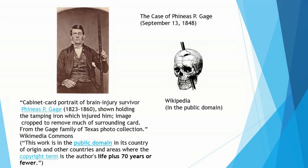It's case studies like this that let us understand, to some extent, the various functions of the brain. Obviously, today there are many other techniques other than waiting for someone to be in an accident, monitoring their behavior afterward, and then looking at the site of damage during an autopsy when they die later of natural causes. There are many other techniques for studying the brain today. But this was a very famous case in the history of psychology — we learned a great deal from Phineas P. Gage's situation.